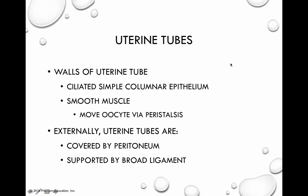Thinking about the structural makeup of the uterine tube from a layer standpoint: the lining is ciliated simple columnar epithelium. Simple columnar makes sense because we need to be able to produce mucus, which requires housing organelles to carry out that level of cellular activity. The cilia allow for movement of the oocyte, and then there is smooth muscle tissue. The smooth muscle contracts under parasympathetic control and allows for movement of the oocyte via peristalsis.